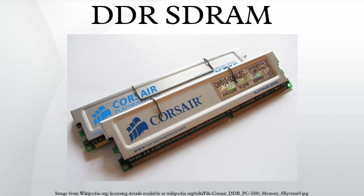History: the double data rate standard derives from JEDEC board ballot JCB-99-70, modified by numerous other board ballots formulated under the cognizance of committee JC-42.3 on DRAM parametrics. Standard No. 79 revision log: Release 1 June 2000, Release 2 May 2002, Release C March 2003.